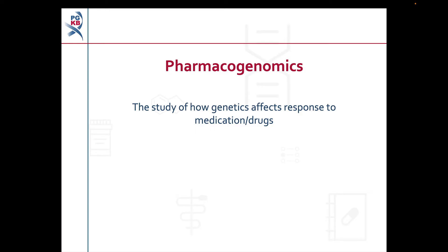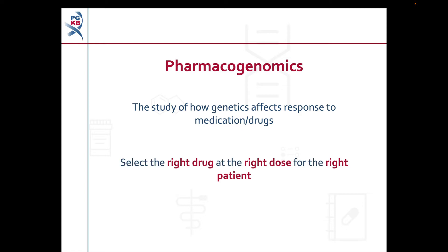Pharmacogenomics is the study of how genetics affects a person's response to a medication or drugs. In pharmacogenomics research we use the word drug to refer to any medication, and I'll be using the word drug for the rest of this video. The aim of pharmacogenomics is to use genetic information to select the right drug at the right dose for the right patient.